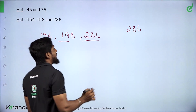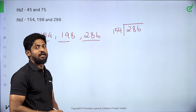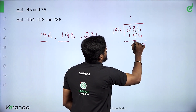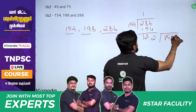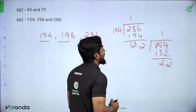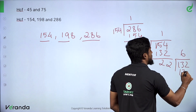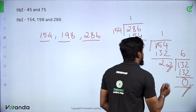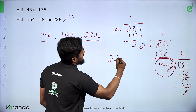What number divides 154? Take 286 divided by 154: 154 goes once, remainder is 132. Now 154 divided by 132: 132 goes once, remainder is 22. Then 132 divided by 22: 22 goes 6 times, remainder is 0. When the remainder is 0, that number is HCF. So in this second sum, 22 is the HCF.